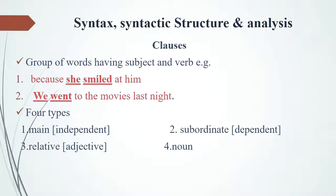Clauses are also groups of words, but they have a subject and verb. For example, 'because she smiled at him' and 'we went to the movies last night.' In 'she smiled,' both subject and verb are given. Similarly, in 'we went to the movies,' subject and verb are both present. Clauses have four main types: main clause, subordinate clause, relative clause, and noun clause. We will discuss all of them in another lecture.